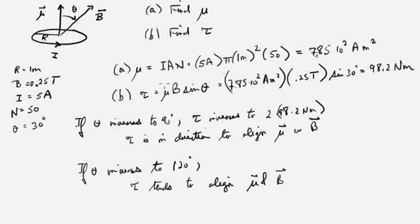To find tau now, tau is the torque, is the magnetic moment times B times the sine of the angle in between them. So that's 785 amp meters squared times a quarter of a tesla, that's the value for B, times the sine of 30 degrees, which is one half. And so that works out to be 98.2 newton meters for the torque.